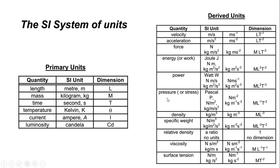For example, pressure is equal to force per unit area, so we are going to take the unit for force per unit area. We know that the standard unit for force is mass times acceleration. Force is Newton, so we need to express this force also as a primary unit.